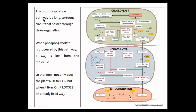The photorespiration pathway is a long, tortuous circuit passing through three organelles: chloroplast, peroxisome, and mitochondria. When phosphoglycolate is processed by this pathway, a CO2 is lost from the molecule — so not only does the plant not fix CO2, but when it fixes oxygen it loses an already-fixed CO2. In terms of energy and carbon combined, the net loss to the plant is 40%, and this flaw in Rubisco has caused C3 plants to become 40% less productive.